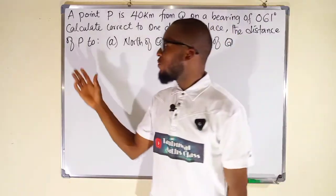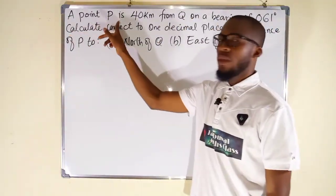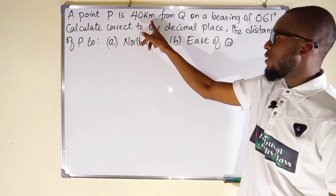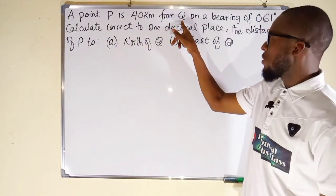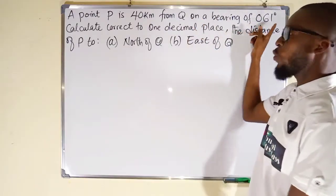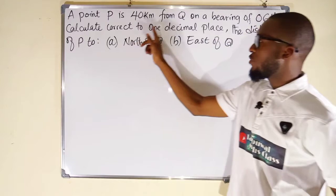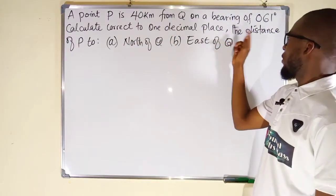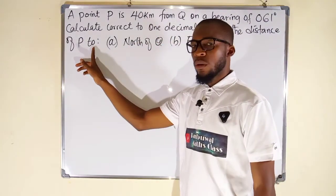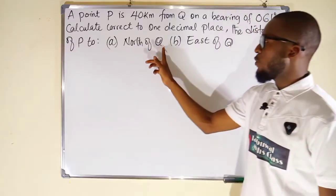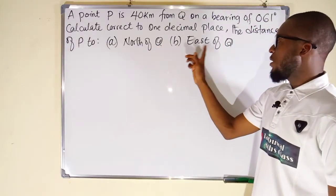The question reads: a point P is 40 kilometers from another point Q on a bearing of 061 degrees. We are asked to calculate, correct to one decimal place, the distance of P to: A, north of Q; B, east of Q.